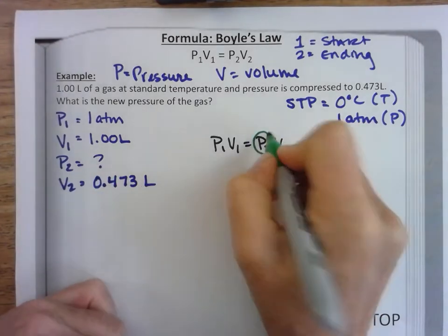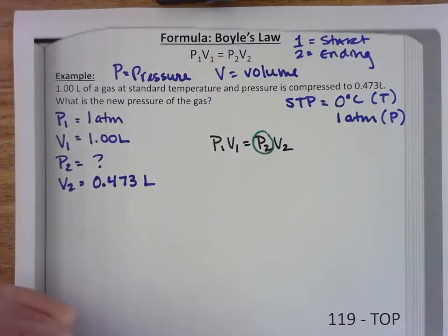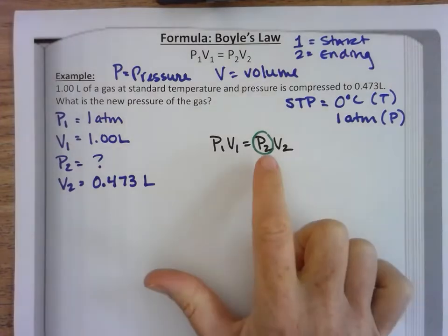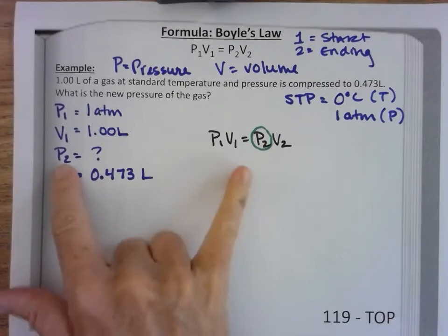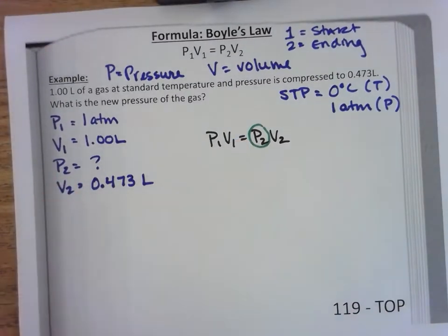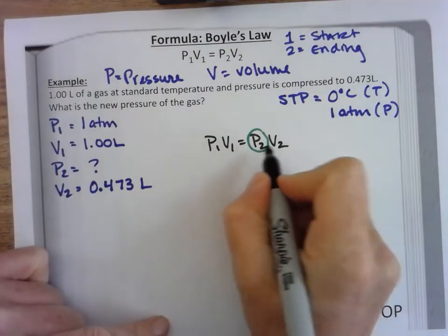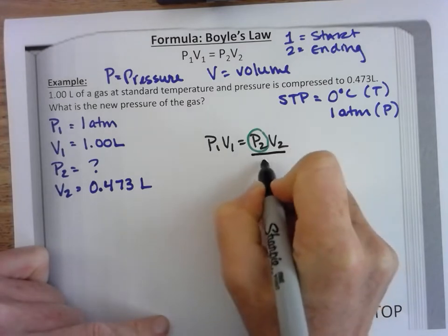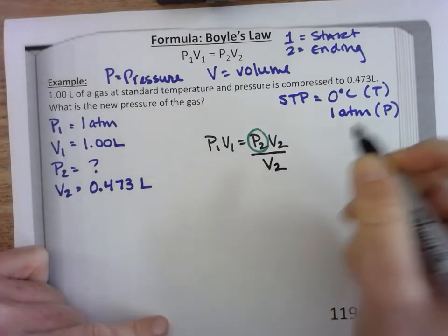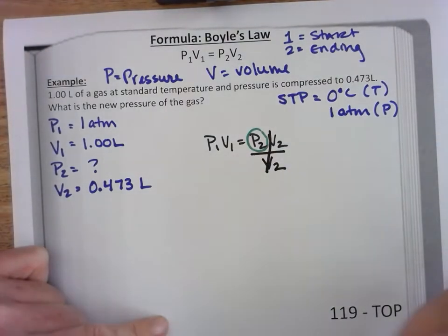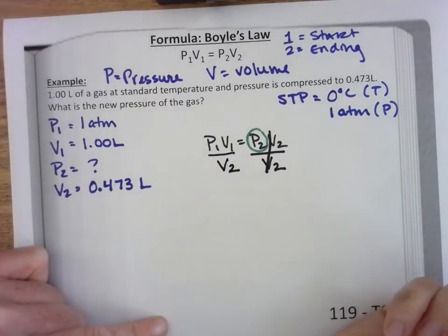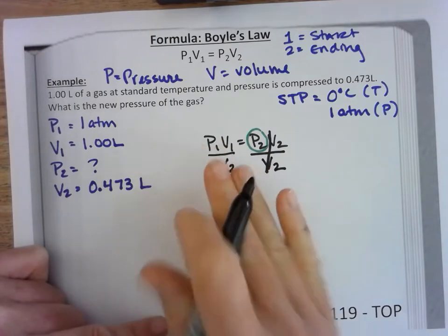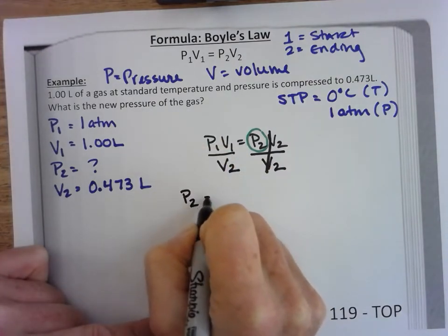Some students really struggle with this. If you circle what it is that you're looking for, you know that you want to leave that by itself. So because we're looking for p2, we need to do some math to get p2 alone. Since these are multiplied I'm going to do the reverse of that which is divide, and that cancels out my v2 on this side. And if I do it to one side I do it to the other side. Now this is kind of a mess, so I would suggest you take the 30 seconds to rewrite your formula.